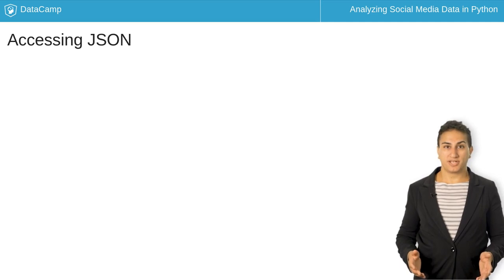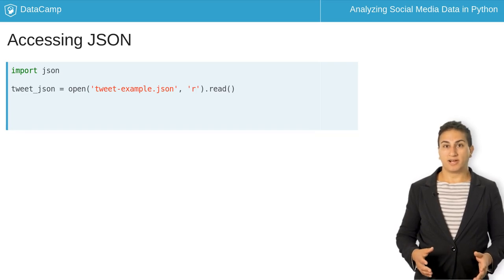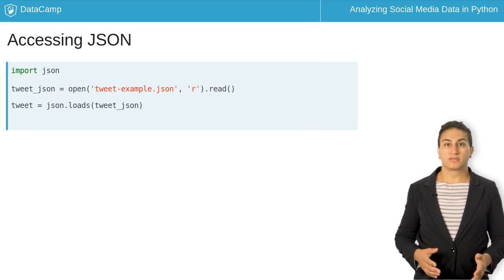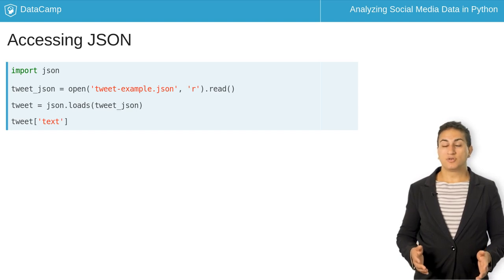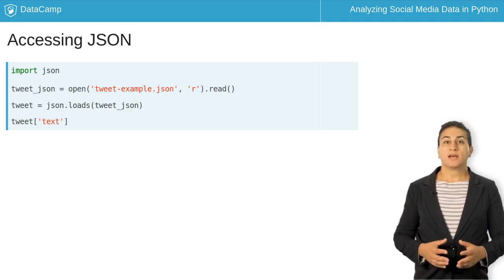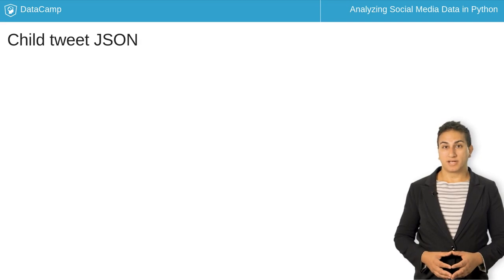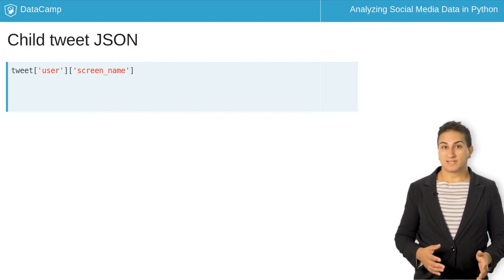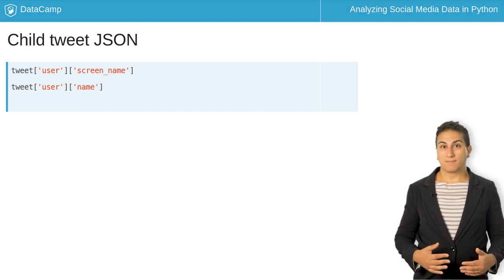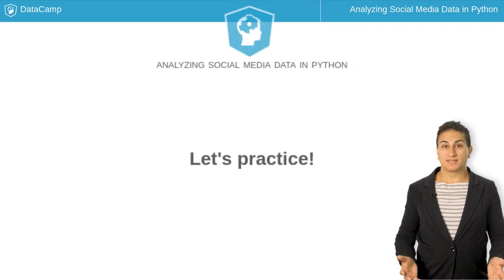Let's start exploring the Twitter JSON by loading a single tweet. We'll use the open and read methods to load a JSON file into a JSON object. Then we'll use the JSON package and the loads method to convert the JSON into a Python dictionary. We access the value of interest by using its appropriate key. Child Twitter JSON can be accessed as nested dictionaries. To access the user's handle, we use the user key then the screen_name key. We can do the same with name to show the user's display name, and created_at to show when the user created their Twitter account.